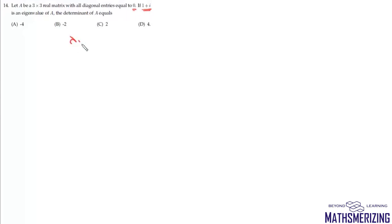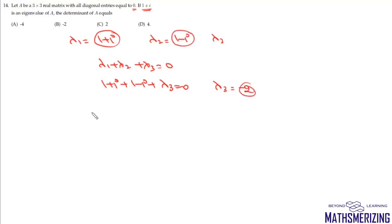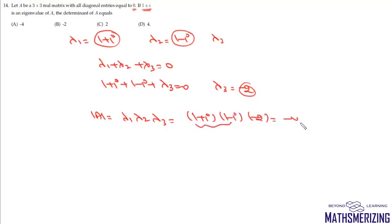Question 14: matrix A is 3×3 real with all diagonal entries 0. If 1 + i is an eigenvalue, then since entries are real, 1 − i is also an eigenvalue. Since trace = sum of eigenvalues = 0, we get (1+i) + (1−i) + λ₃ = 0, so λ₃ = −2. Determinant = (1+i)(1−i)(−2) = 2 × (−2) = −4. That's option A.